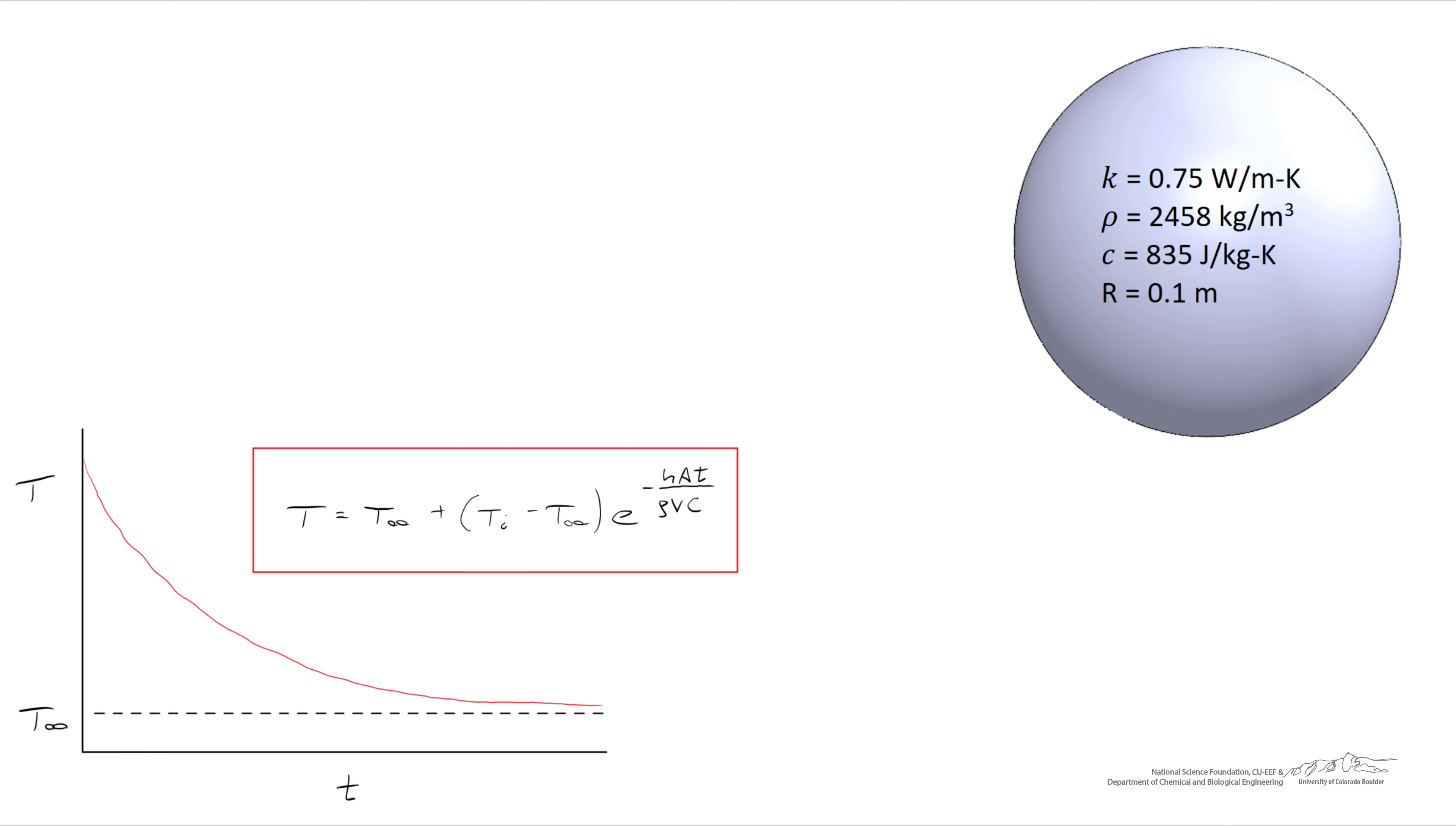Let's use this equation to solve an example problem in which we have a sphere made of glass with a radius of 0.1 meters and known thermal conductivity, density and heat capacity. We also know that the ambient temperature T infinity is equal to 20 degrees C, and the heat transfer coefficient H is equal to 30 watts per meter squared Kelvin. This sphere is real hot to begin with, it's an initial temperature of 500 degrees C, and we want to figure out the temperature at a time of 30 minutes.